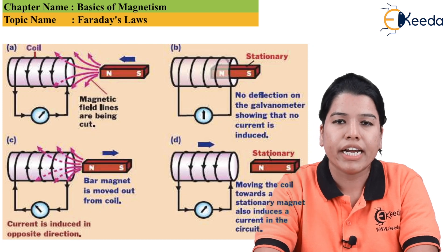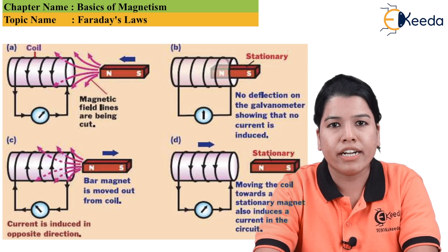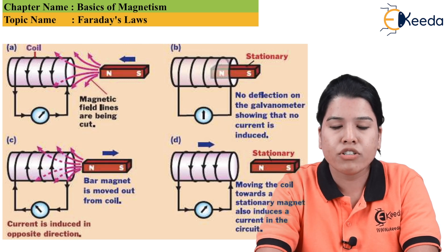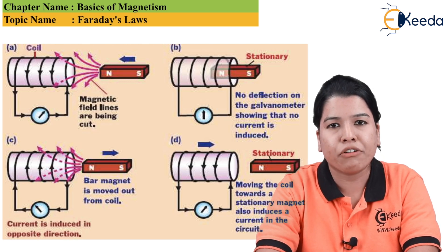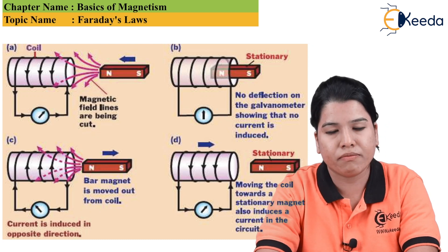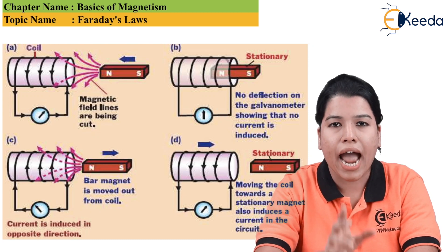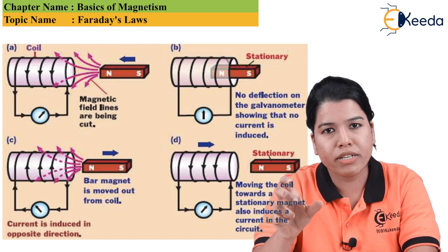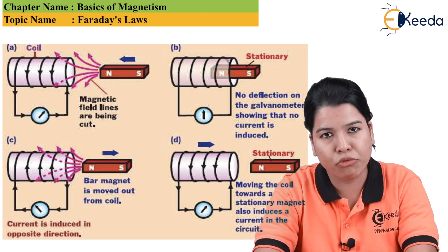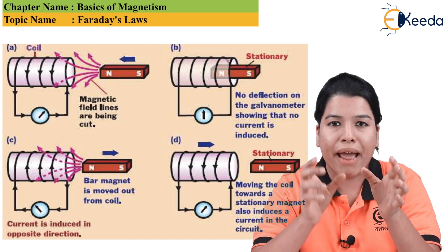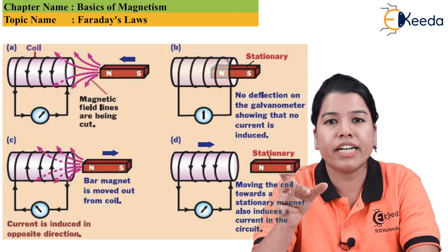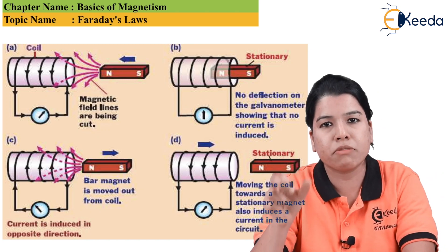Now, in order to determine the truthfulness of this law, the most important things required are a conductor and a magnetic field. Either the conductor should be stationary and the magnetic field must be moving, or the magnetic field must be stationary and the conductor must be moving.